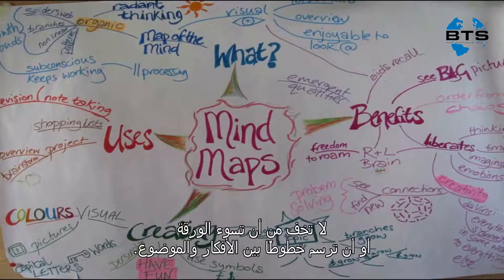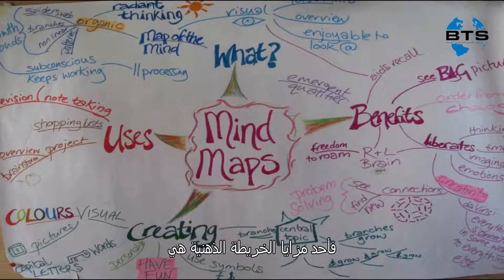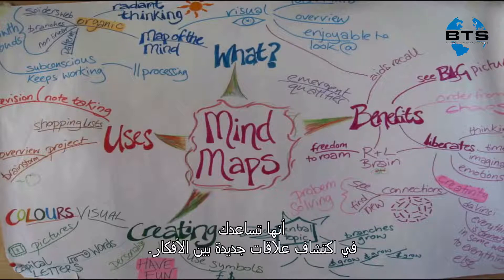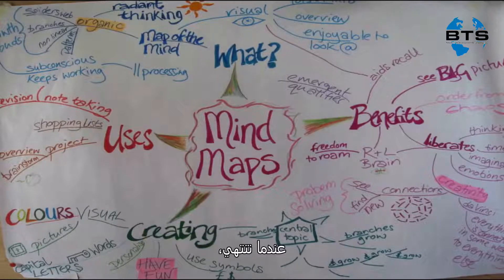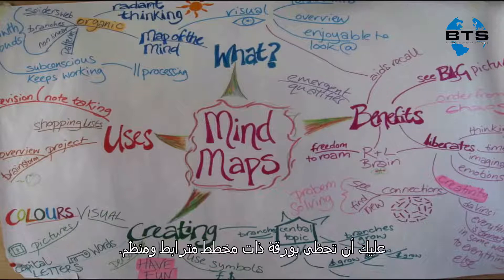Don't be afraid to get messy and draw lines between points or themes. One of the advantages of the mind map is that it helps you discover new relationships between ideas. If you like, you can add pictures or use different colors for each theme. When you're done, you should have a sheet of paper with an organic, associative outline of your topic.